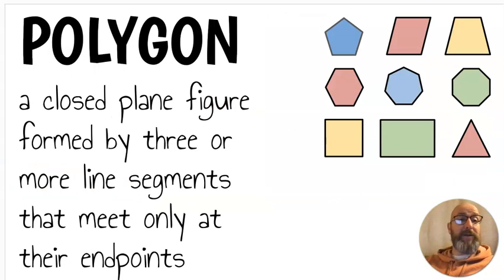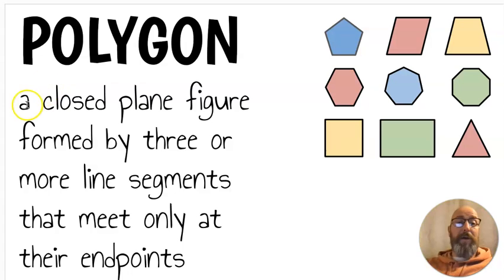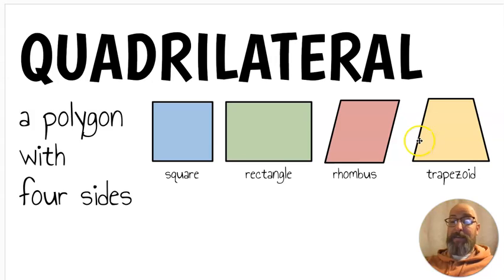Next let's get into geometry. A polygon is a closed plane figure — a flat 2D figure — formed by three or more line segments that meet only at their endpoints. Poly means many, so that's many sides. One special kind of polygon is a quadrilateral. Quad means four, so a quadrilateral is a polygon with four sides. Examples include a square, a rectangle, a rhombus, and a trapezoid — those are all quadrilaterals.